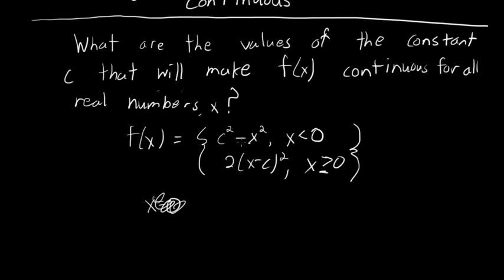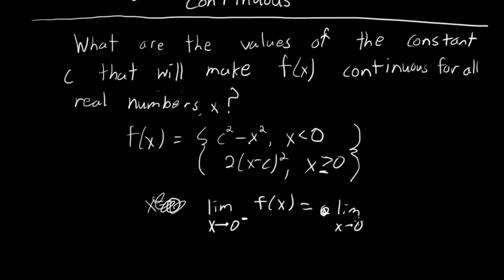We're interested in the point x equals 0 specifically. The limit as x approaches 0 from the left of f of x: that's the limit as x approaches 0 from the left of c squared minus x squared, which is just going to be c squared.